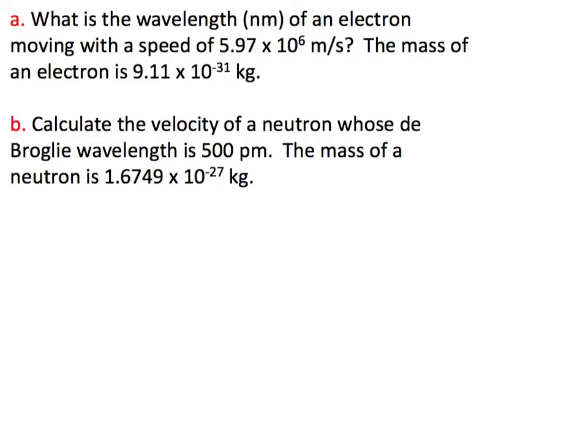All right, question 6.4 is two parts. So what is the wavelength in nanometers of an electron moving with a speed of 5.97 times 10 to the 6 meters per second, and we're given the mass.